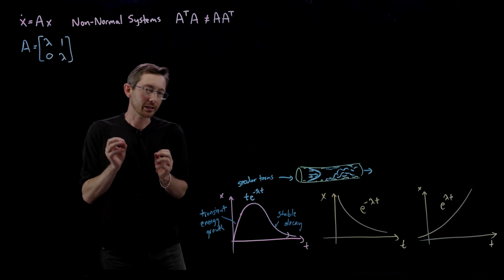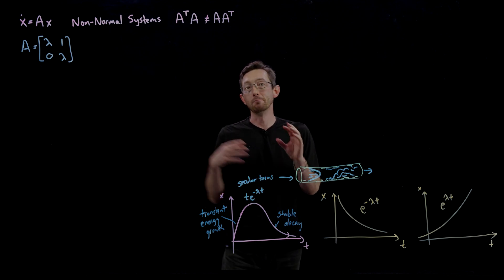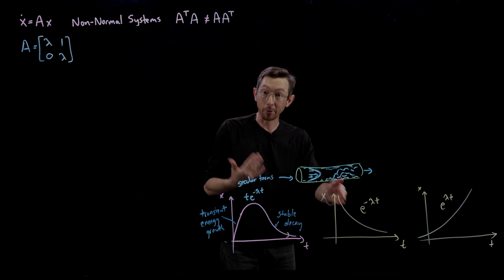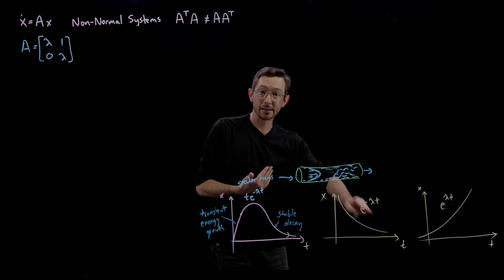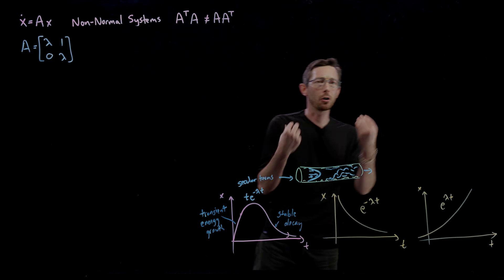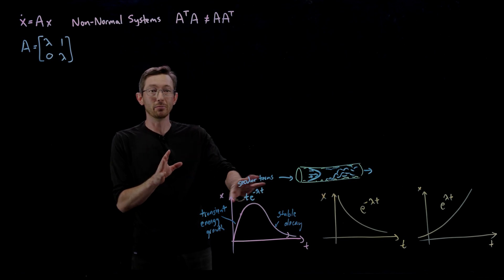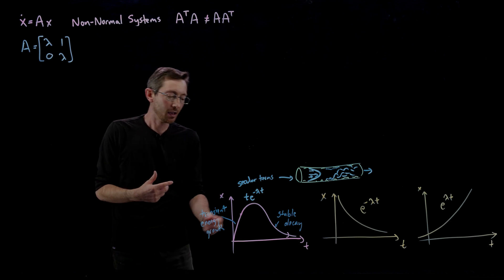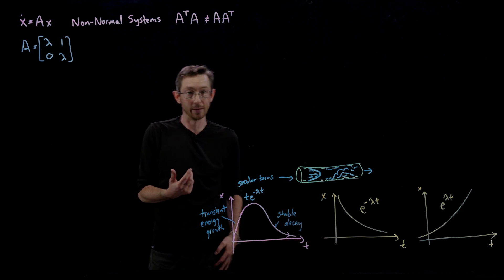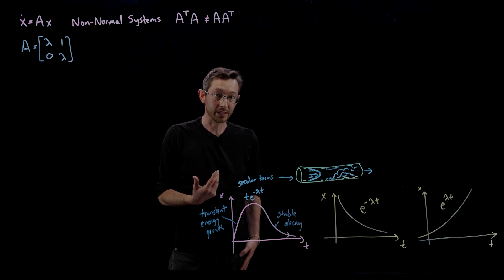Welcome back. In the last lecture, I showed you that in addition to matrix systems x-dot equals Ax with stable eigenvalues like e^(-λt) or unstable eigenvalues like e^(+λt), there are also these strange in-between cases where the trajectory looks initially unstable but eventually becomes stable. This is called transient energy growth, after which it goes into stable decay.